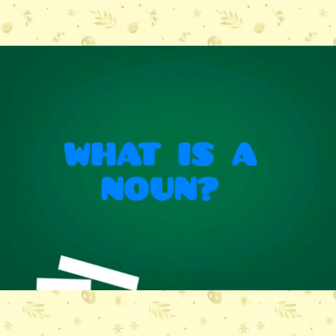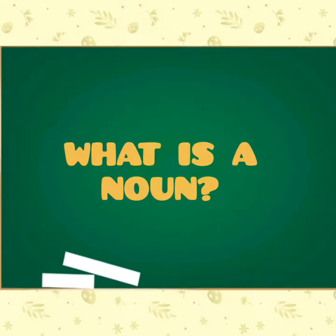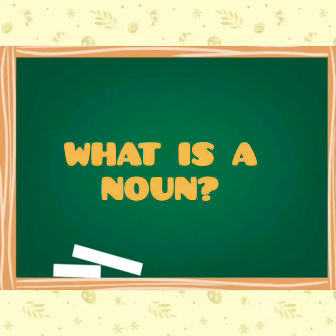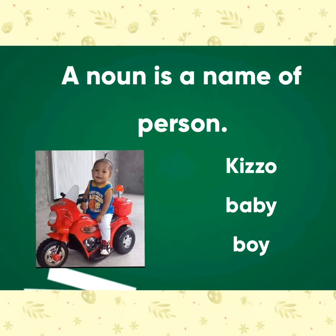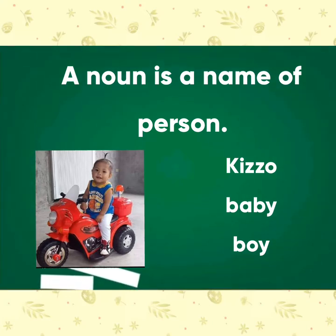A noun is a name of a person, place, event, idea, animal, or thing. Everything that has a name is called a noun. For example, a noun can be a name of a person — Kizo, baby, boy.